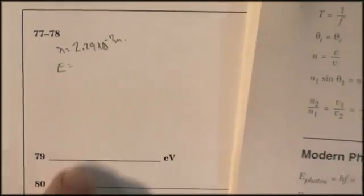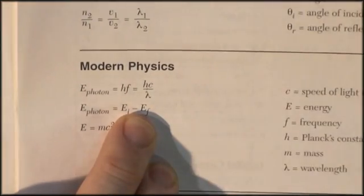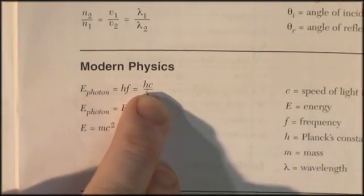Hf. Wait a minute. I've got lambda. Oh, wait. Look. They do the algebra for me. Hc over lambda. So we're going to say the energy of photon is hc over lambda.